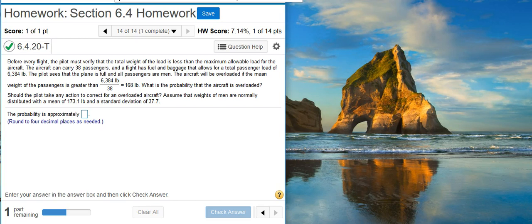Here's our problem statement. Before every flight, the pilot must verify that the total weight of a load is less than the maximum allowable load for the aircraft. The aircraft can carry 38 passengers, and a flight has fuel and baggage that allows for a total passenger load of 6,384 pounds.